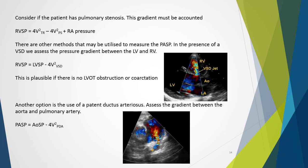Consider if the patient has pulmonary stenosis. The right ventricle must work harder to overcome the stenosis, and thus right ventricular systolic pressure does not equal pulmonary artery systolic pressure. Applying the previous formula would overestimate pulmonary pressures. This gradient must be accounted for, so the formula becomes: RVSP = 4VTR² − 4V²(pulmonary valve velocity) + the RV-to-PA gradient.